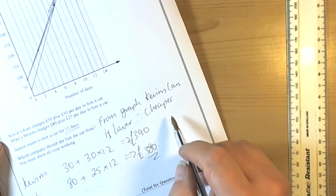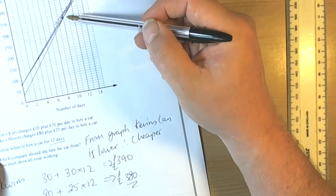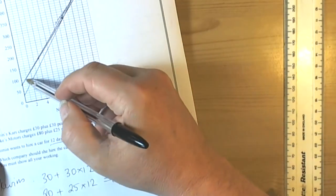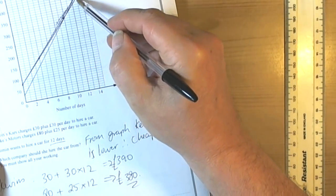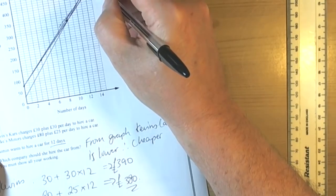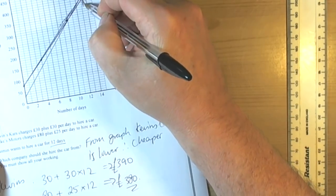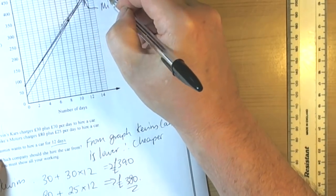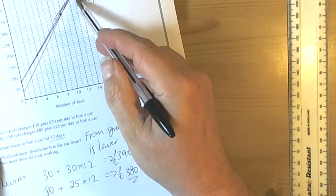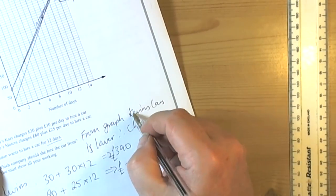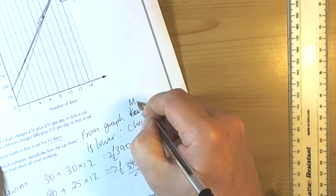Good job I did that because I've now realized that when you look at the graph, Kevin's Cars is actually that top one. This is really important about labeling. That's Mike's, and actually Mike's is cheaper. So from the graph it's not Kevin's, it's Mike's.